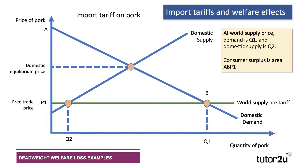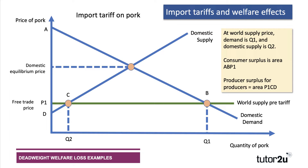The import quantity will be Q2 to Q1. Now focusing on welfare, we need to bring in the concept of consumer surplus. At price P1, if quantity Q1 of pork is being demanded, then total consumer surplus is area A, B, P1 — that big triangle. That represents the idea that cheap imports bring down prices for consumers and encourage a high level of consumer surplus. The producer surplus is low at P1, C, D, because domestic producers are unable to compete at that very low price, so they get a low level of producer surplus — and that is clearly going to change once we introduce a tariff.